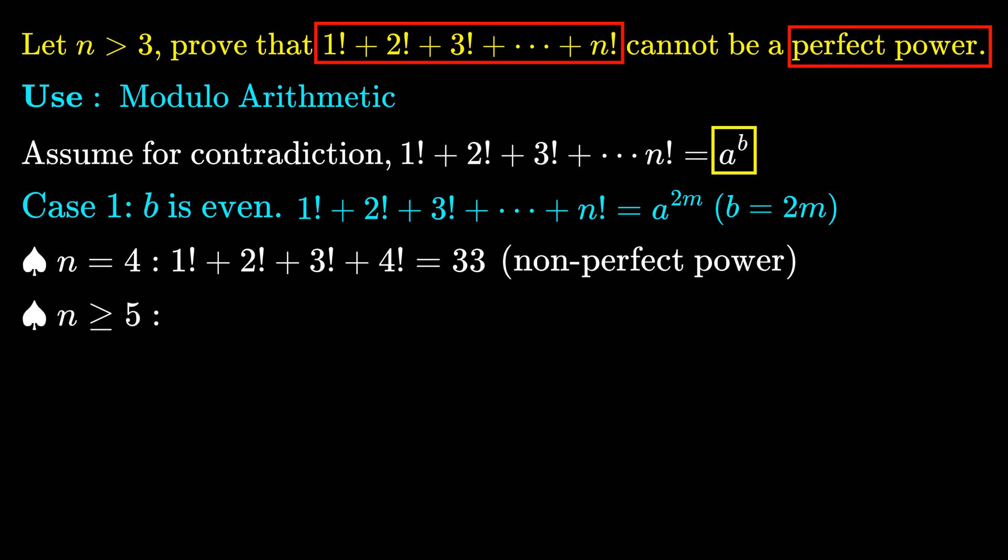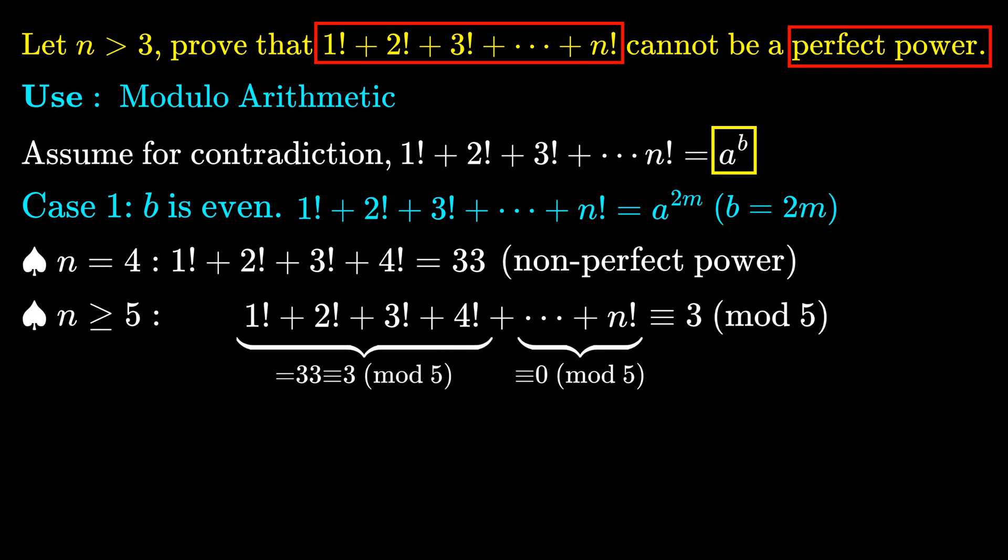When n ≥ 5, the sum of first n factorials is congruent to 3 mod 5. All factorials after 4! have a multiple of 5, so they are congruent to 0 mod 5. The sum of 1! to 4! is 33, which is congruent to 3 mod 5. So the whole sum is congruent to 3 mod 5.